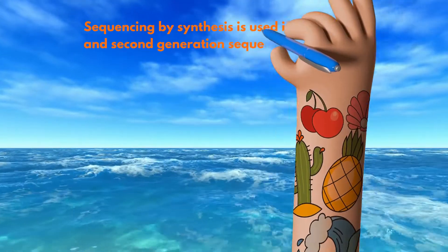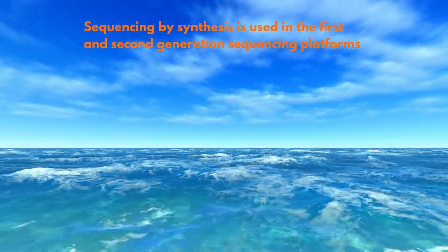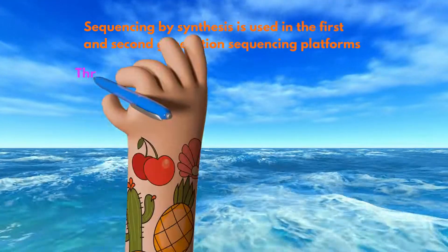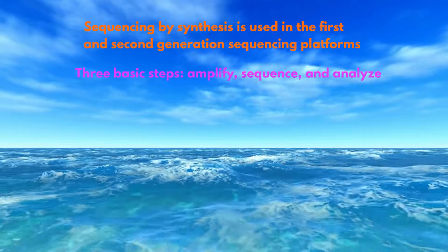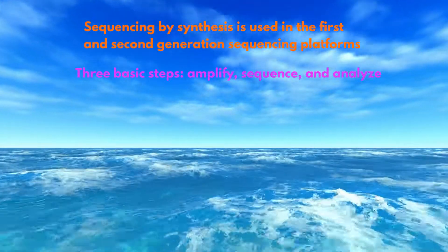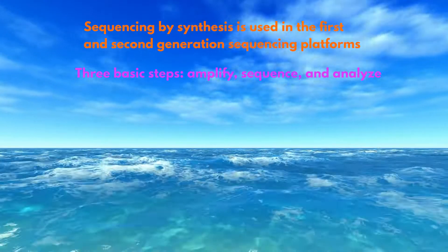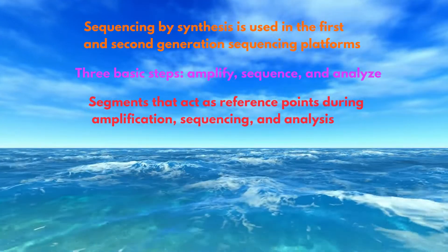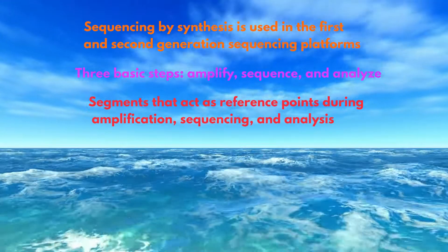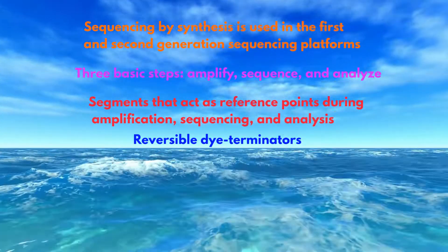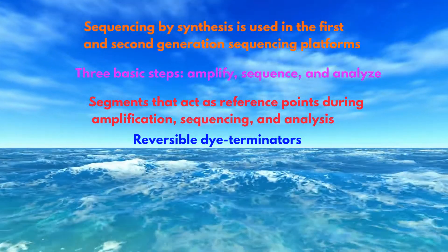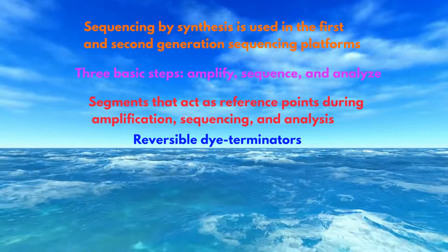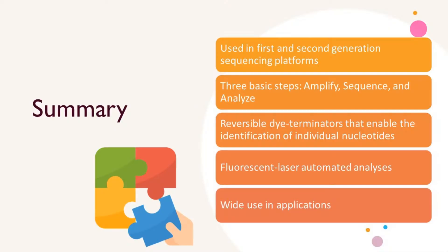In a nutshell, sequencing by synthesis is used in first and second generation sequencing platforms and works in three basic steps: amplify, sequence, and analyze. The process begins with purified DNA that is fragmented and fitted with adapters containing reference-point segments used during amplification, sequencing, and analysis. This sequencing method is based on reversible dye terminators that enable the identification of single nucleotides as they are washed over DNA strands. These platforms are automated, with a computer determining what base was added by the wavelength of the fluorescent tag and recording it for every spot on the chip.